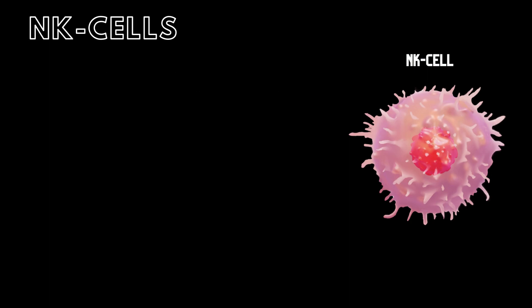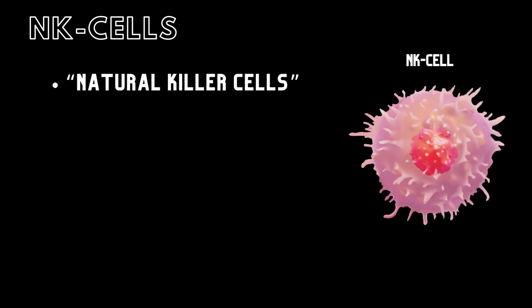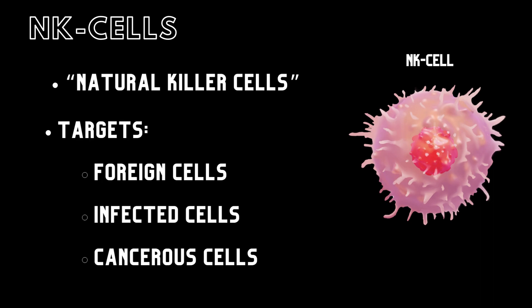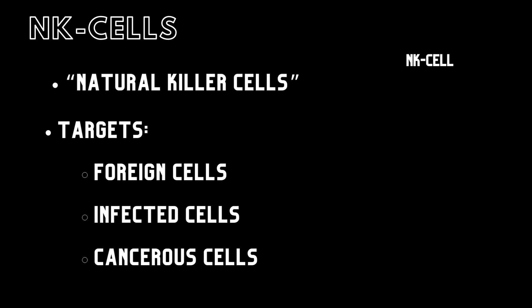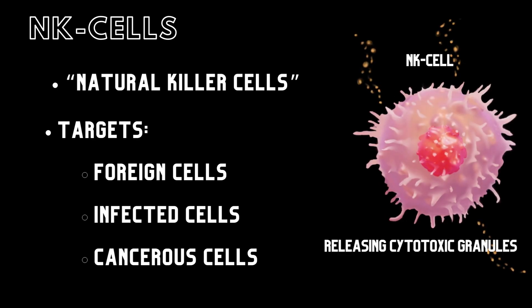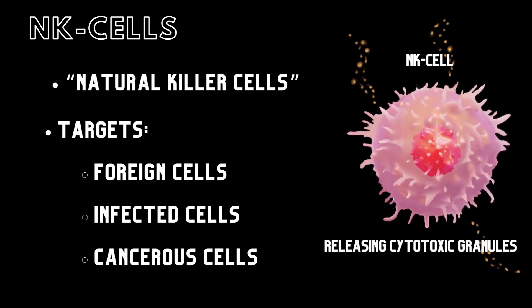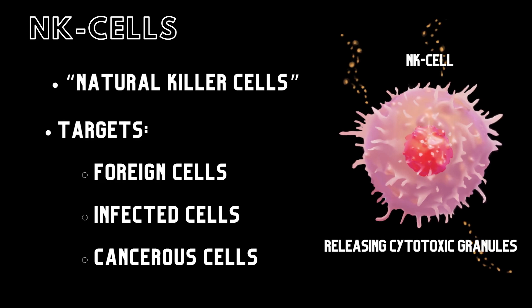NK cells, or natural killer cells, also have a role in the immune system by targeting foreign cells, normal cells infected with viruses, and cancerous cells that have infiltrated healthy tissues. NK cells release toxic granules to eliminate target cells.